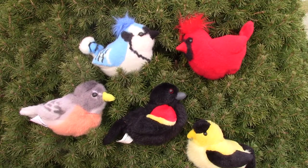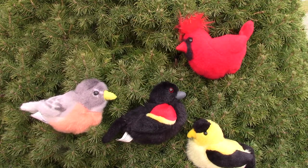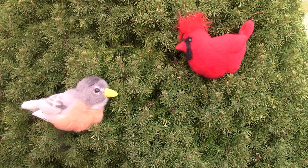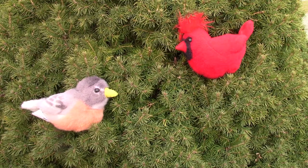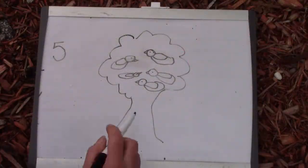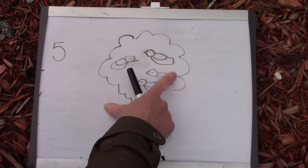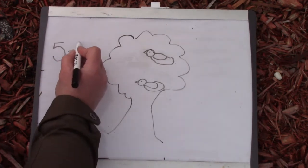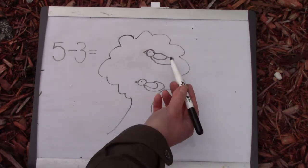Class, there are five birds in the tree. But the blue jay flew away, the red-winged blackbird flew away, and the goldfinch flew away. How many birds are left? You're right, there are two birds — the robin and the cardinal. But if we didn't have birds and we didn't have a tree, how could we solve this problem? We could draw. We had five birds, but then one, two, and three of them went away. Five minus three equals how many? One, two.